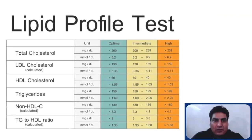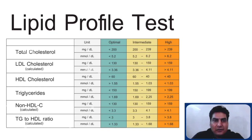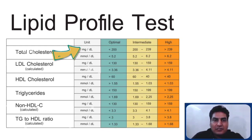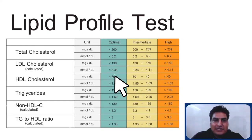For this we do the lipid profile test. In the lipid profile test, we measure total cholesterol, HDL cholesterol, LDL cholesterol, triglyceride level, and VLDL in milligrams per deciliter. The desirable range of total cholesterol should be less than 200, LDL less than 100, HDL more than 60, and triglyceride less than 150 milligrams per deciliter.